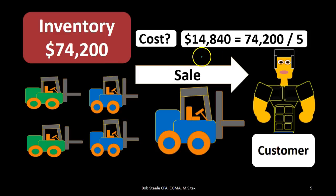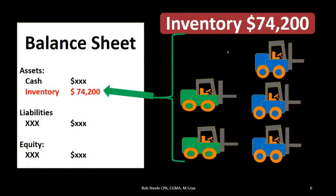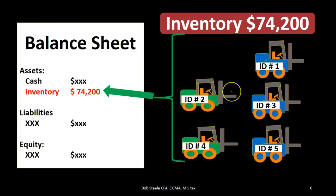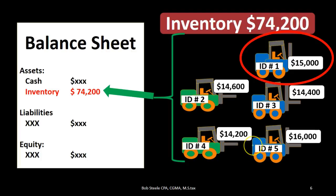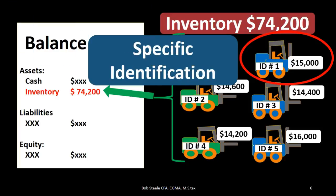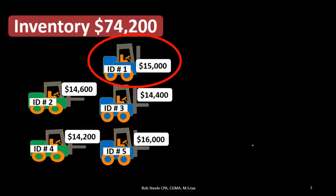We might take the five forklifts, divide the total $74,200 by five, and say each forklift is worth $14,840 — that's an averaging method. Alternatively, we could assign ID numbers and track specific dollar amounts: ID number one cost $15,000, number two cost $14,600, number three cost $14,400, and so on. This is called specific identification, which allows us to track the actual cost of each individual item.